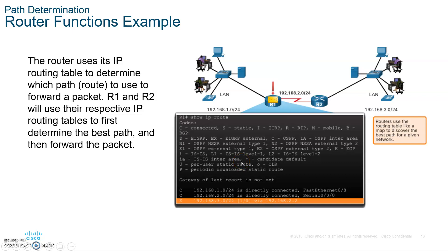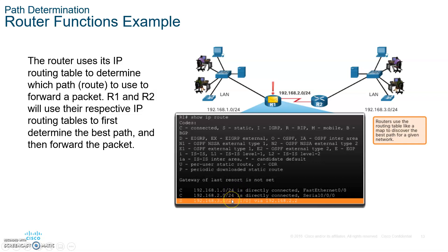When a packet comes in, the router looks at the destination IP address and performs an AND operation with the first subnet mask. If the result matches the network address, the router sends the packet to that interface. If there's no match, it moves to the next entry, performs another AND with the next mask, and if that matches, the packet is sent to Serial 0/0/0. If none of the entries match, the packet is dropped.